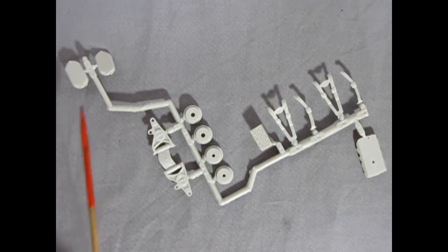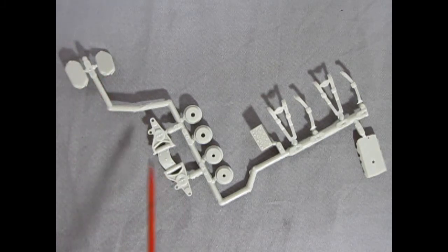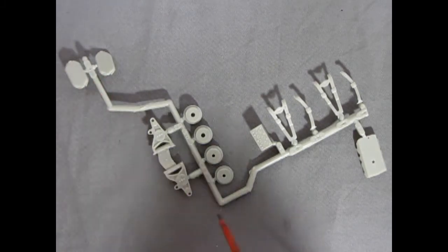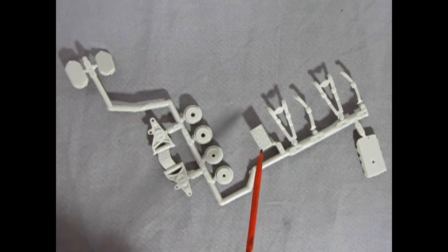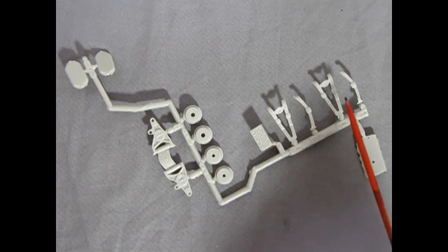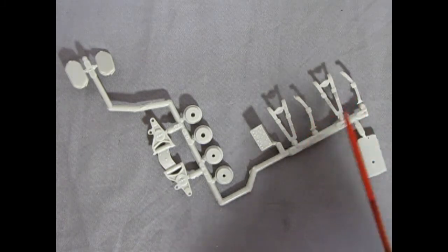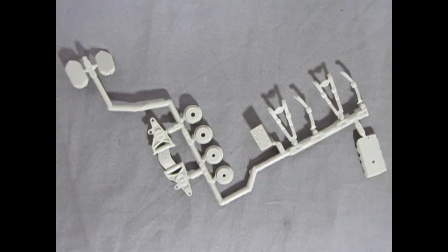And to continue on, on this parts tree, we have our two catalytic converters, our lower A arms for our suspension, our four brakes. These are gauges for the dashboard, racing gauges. And then we have our four-piece harness seat belts.